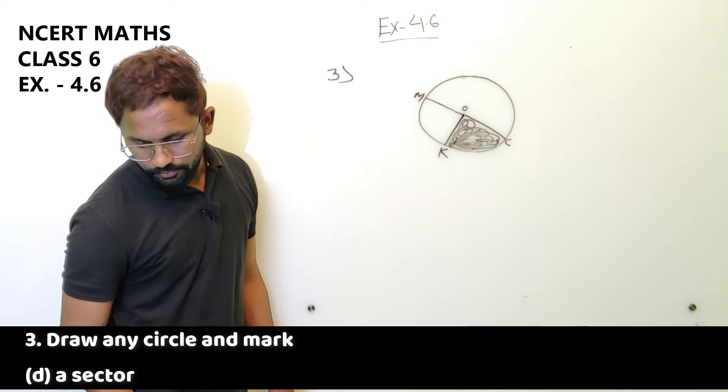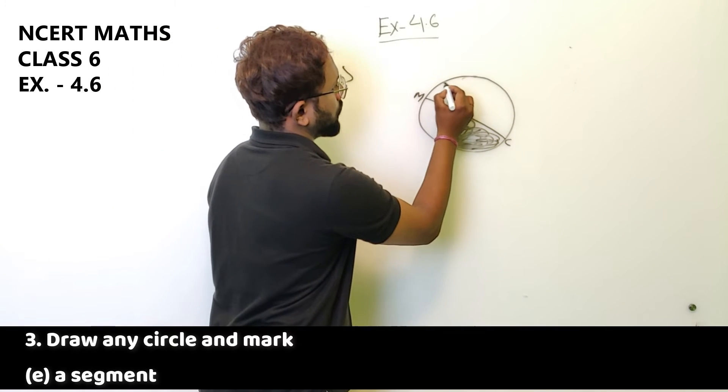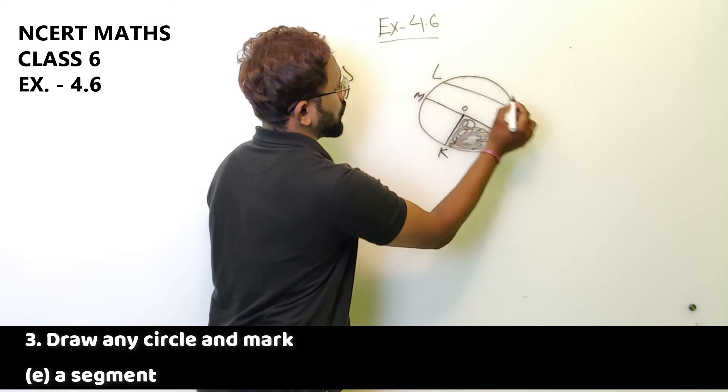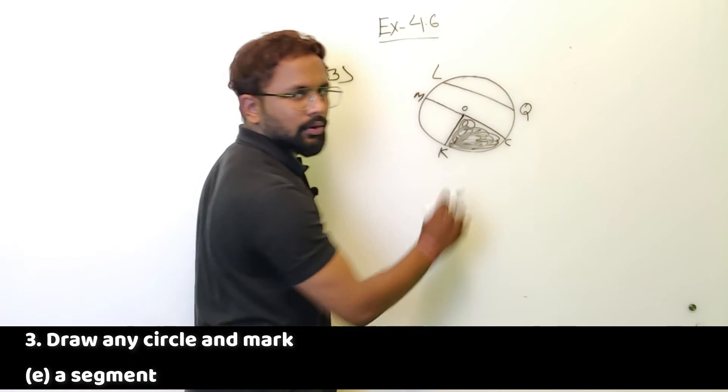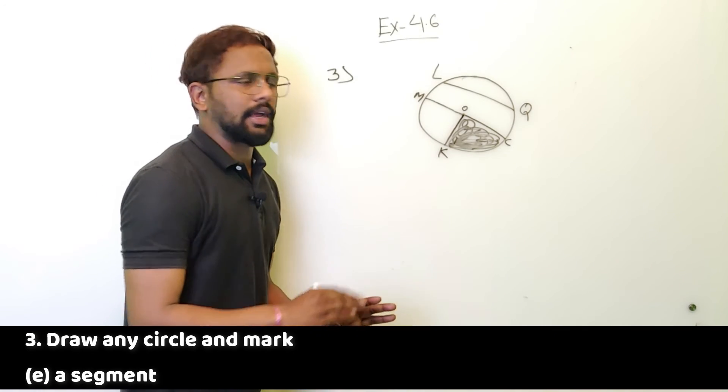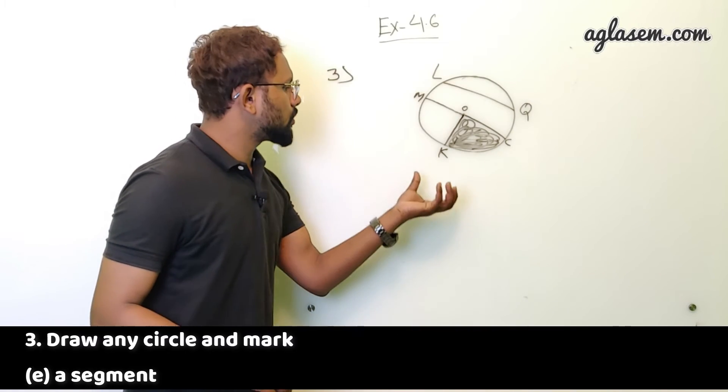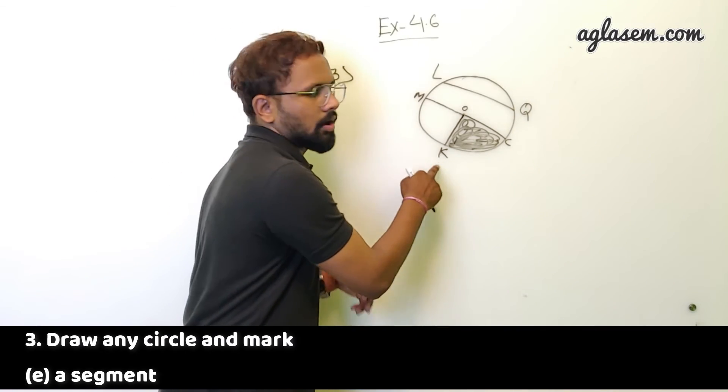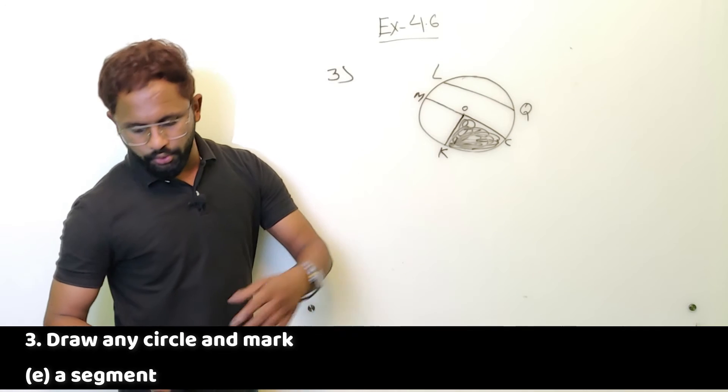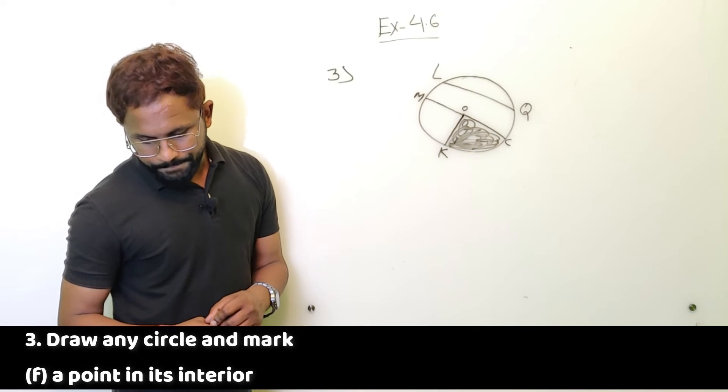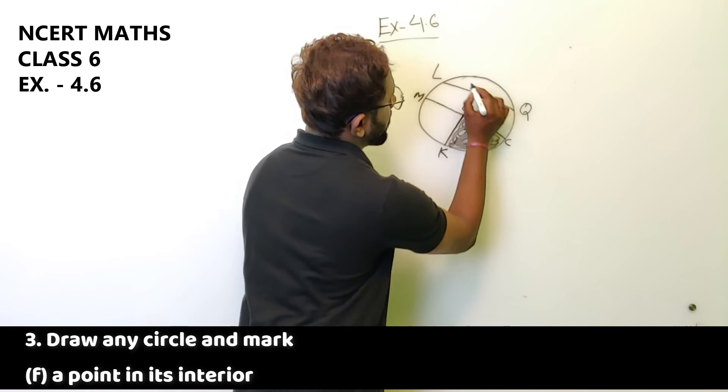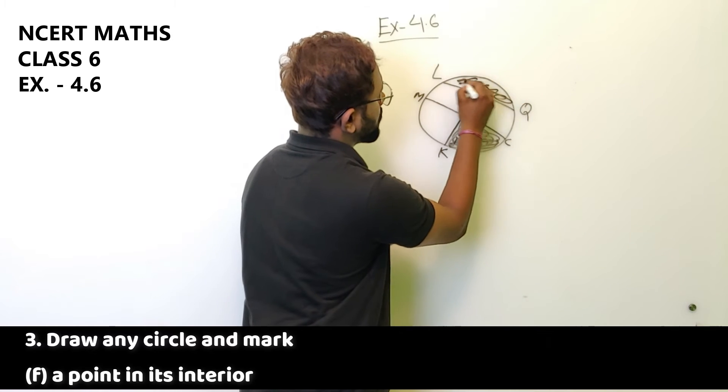A sector. So sector is K, and this is the sector. KOC is the sector. A segment. LQ is the segment. I'm naming it randomly. You can write whatever you want. You can give K a name like A, B, C, D. It's up to you. F, a point in the interior. So the point in the interior, this is a point. Let's say it's A.